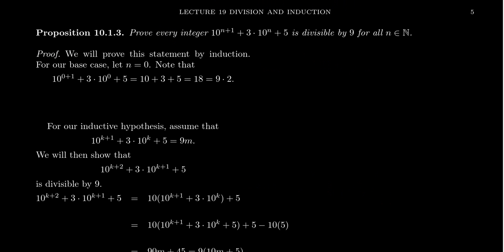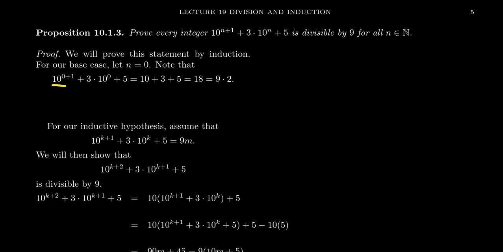Let's look at two more induction proofs. We're going to go through these ones faster. Remember: three phases — base case, inductive hypothesis, and inductive step. We're going to prove that every integer of the form 10^(n+1) + 3·10^n + 5 is divisible by 9, for all natural numbers including zero. So we declare we'll prove this by induction. For the base case, n = 0: 10^(0+1) + 3·10^0 + 5 = 10 + 3 + 5 = 18 = 9×2. So the base case is satisfied.